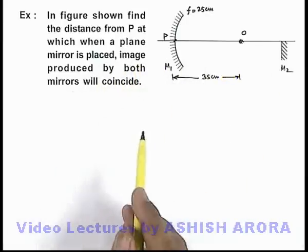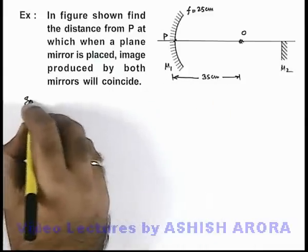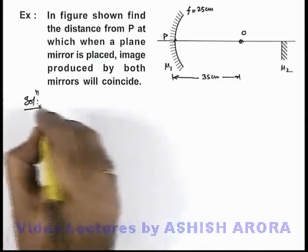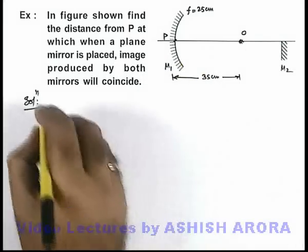This corresponds to the object given in the situation which is located at a distance 35 centimeters from the mirror M1. Here if we find out the image produced by the concave mirror for the object, then...